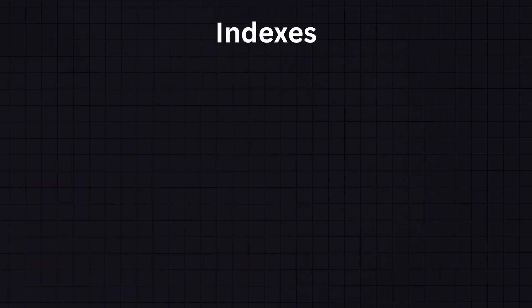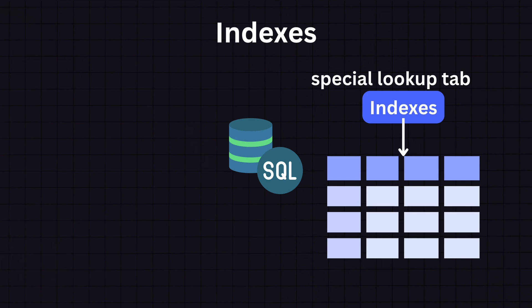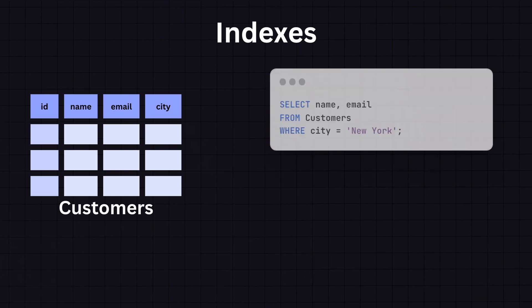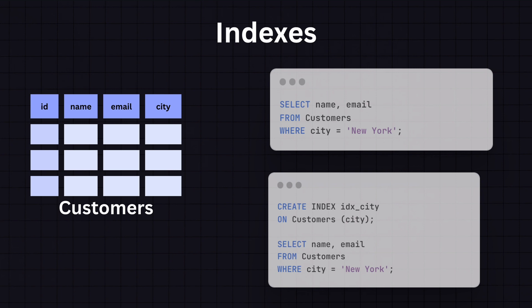The next important part are indexes, which are special lookup tables that the database search engine can use to speed up data retrieval. Suppose our customers table has thousands of rows and we often need to query customers based on their city, which is not the primary key. An index on the city column can significantly speed up these queries. Without an index, a query to find customers in a specific city, say New York, would require a full table scan — this is inefficient especially for large tables.